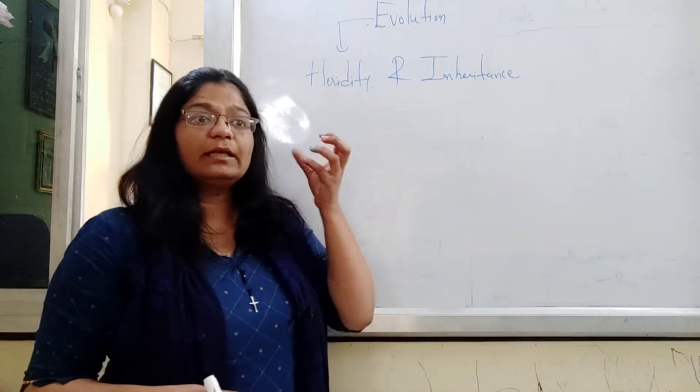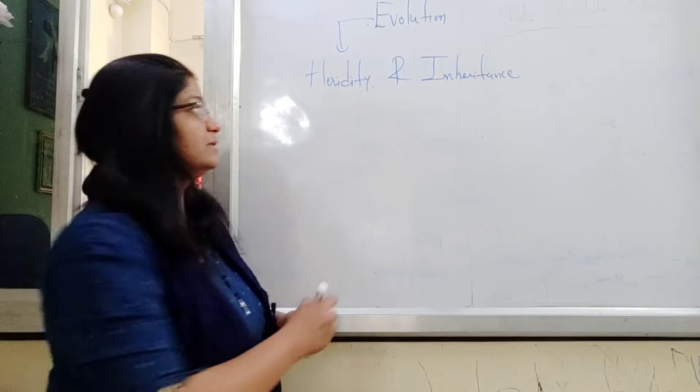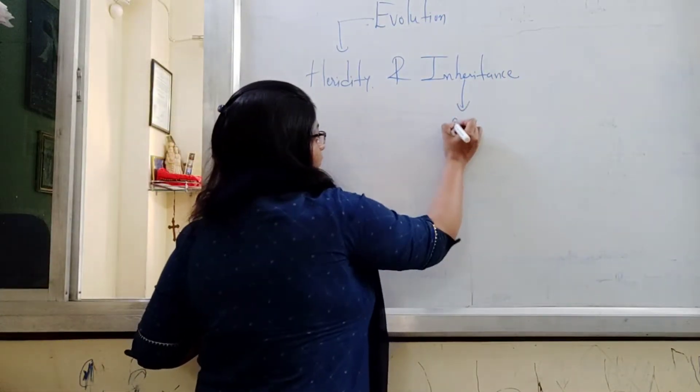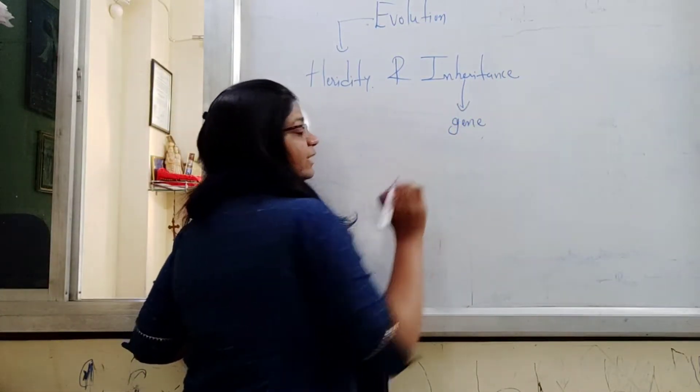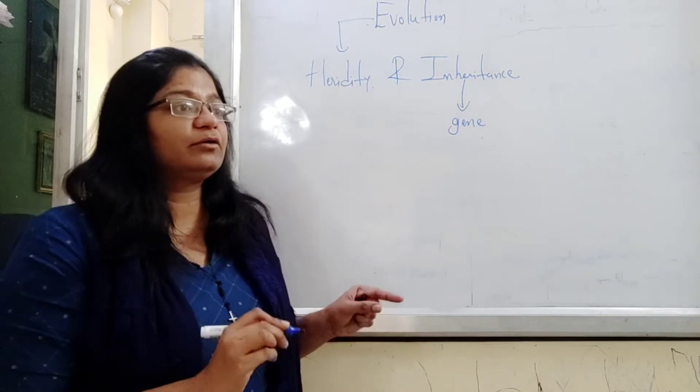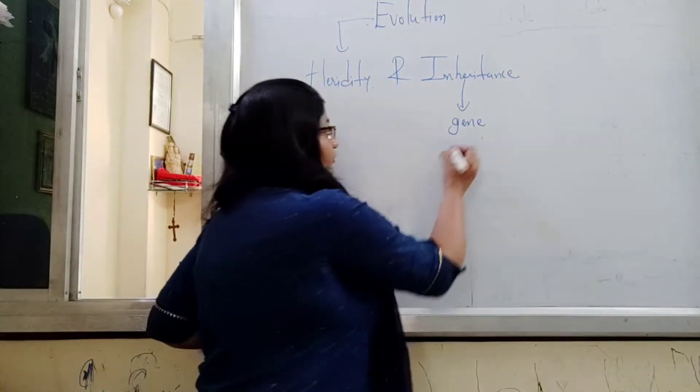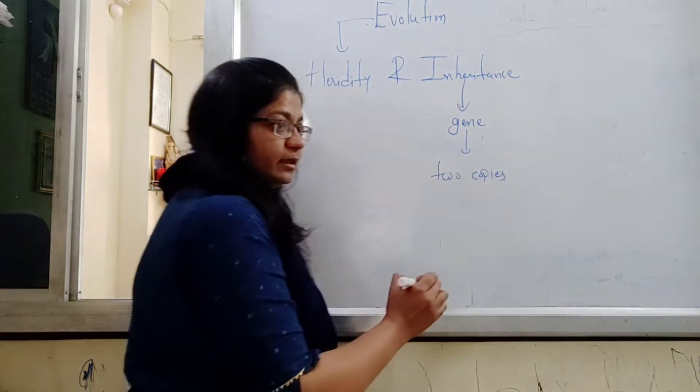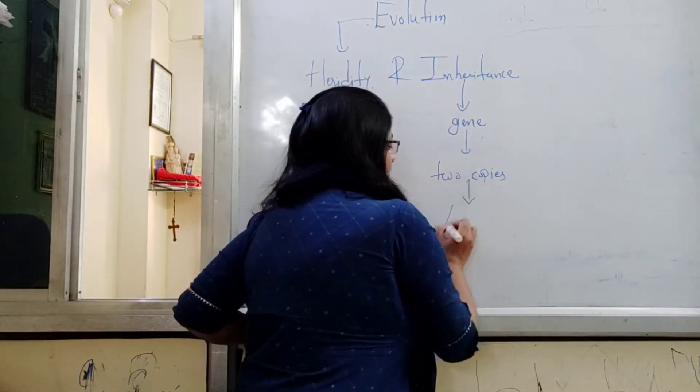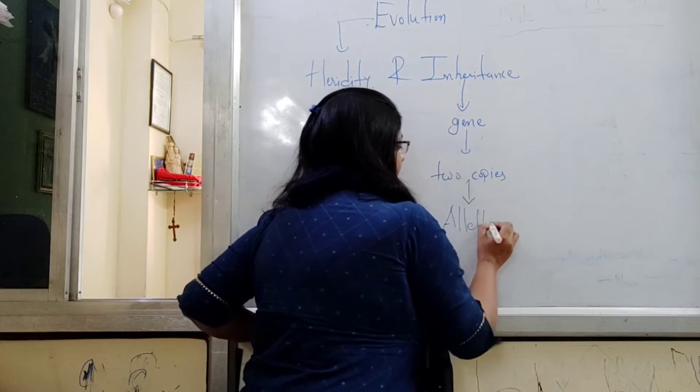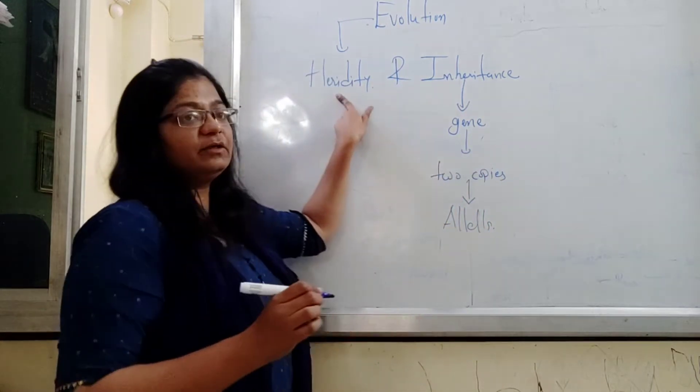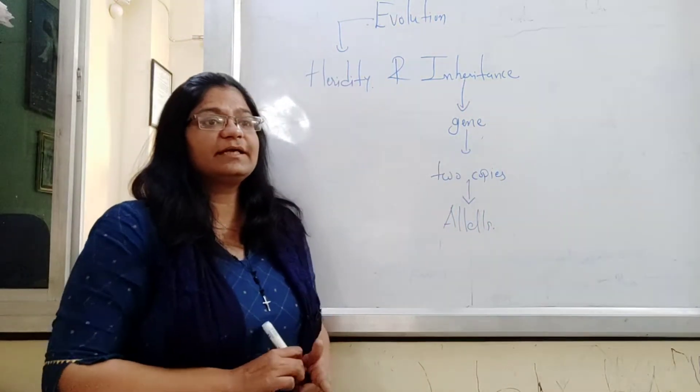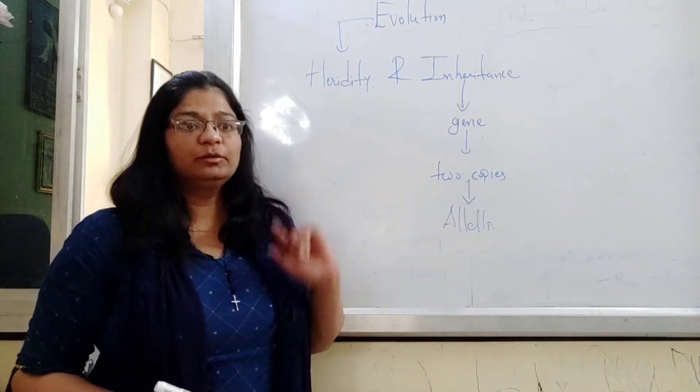So heredity is a phenomenon, and in this phenomenon the tool which is used or vehicle which is used, that is inheritance. And the vehicle here for inheritance is a gene. Each and every individual, whether it's a microorganism or not, they would be having two copies of genes, and these copies are called alleles.